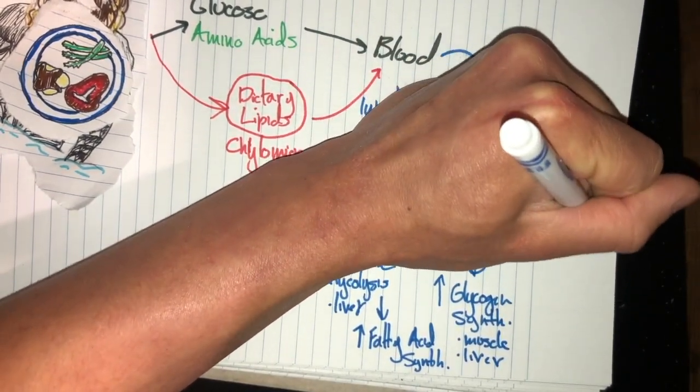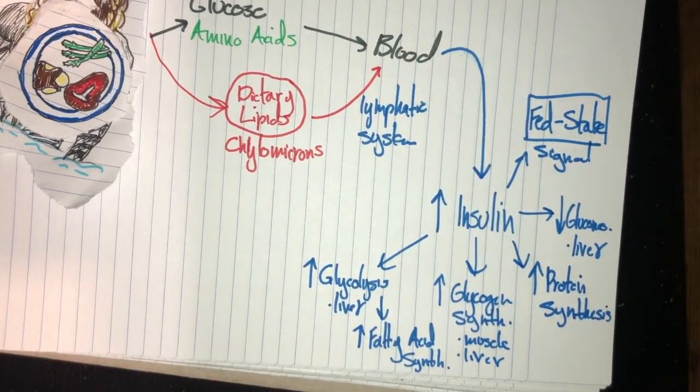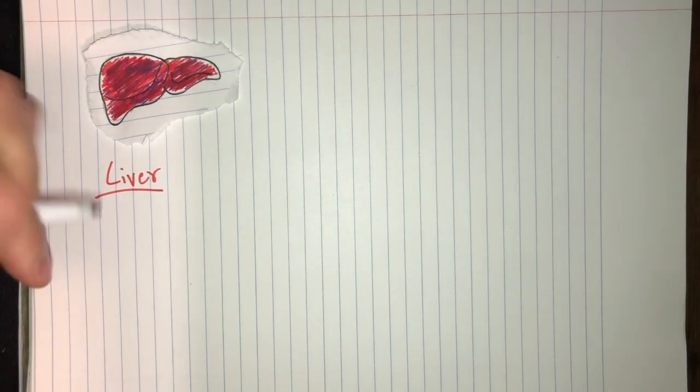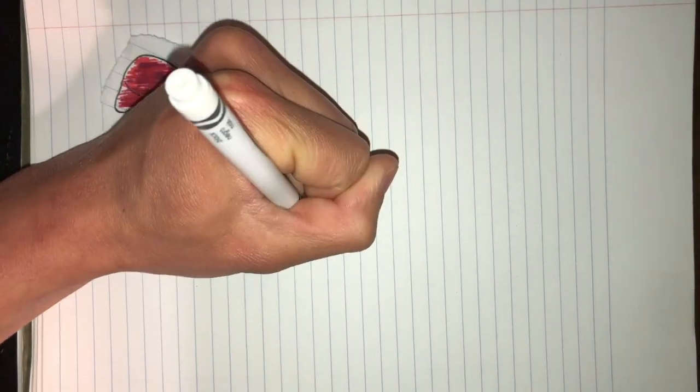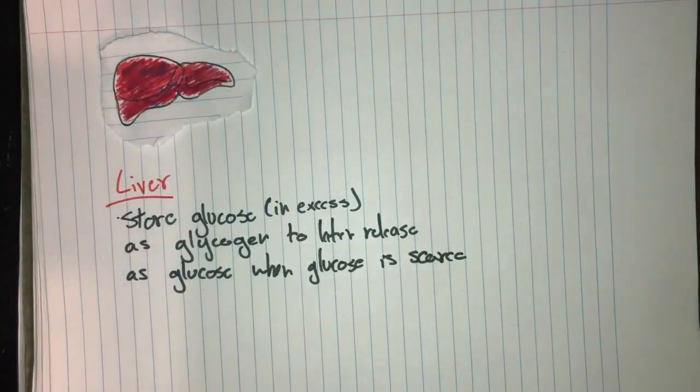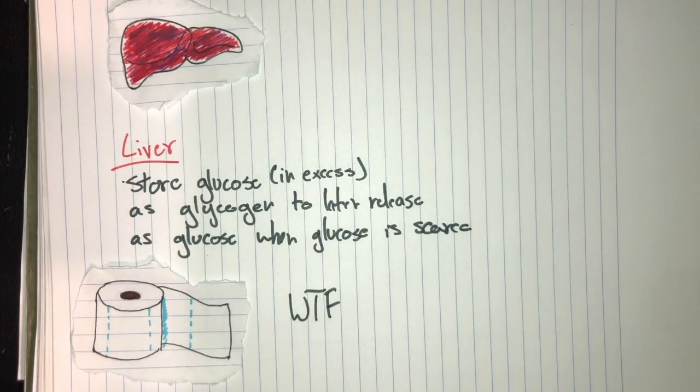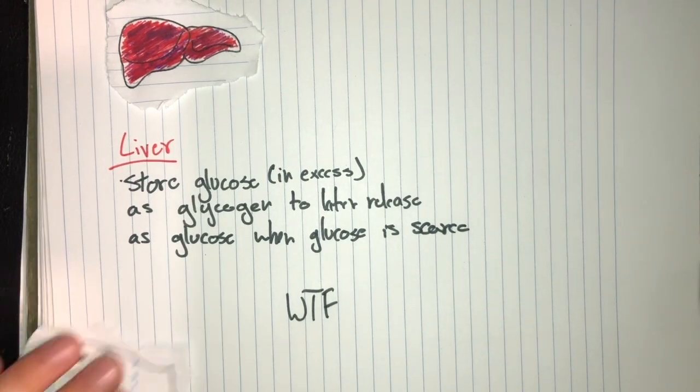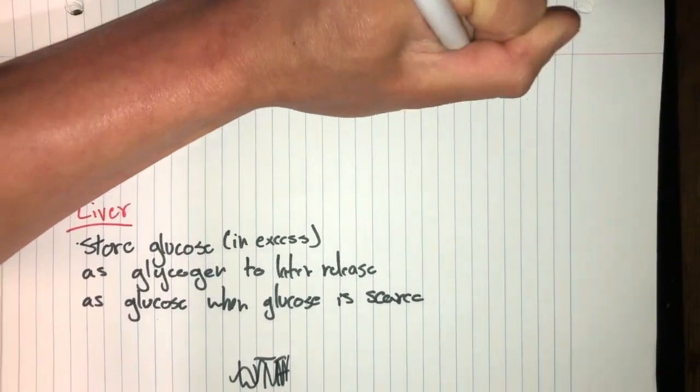These are all good things. It also decreases gluconeogenesis in the liver and upregulates protein synthesis. Moving on, let's talk about the liver a little bit more closely. The liver actually takes up excess glucose and stores it as glycogen to later release. Once it's released, it's released as glucose once again, and this is all when glucose is really scarce, we're not taking anything in. It's kind of similar to what's happening with toilet paper right now.